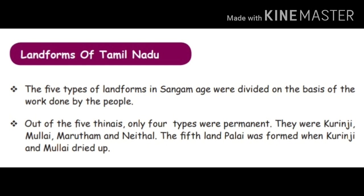Out of the five thinais, only four types were permanent. They were Kurunji, Mullai, Marudam and Neidhal. The fifth land, Palai, was formed when Kurunji and Mullai dried up.